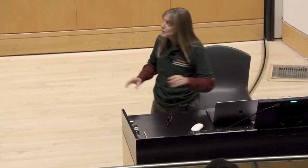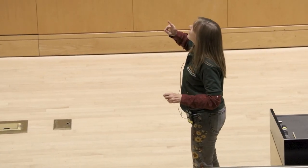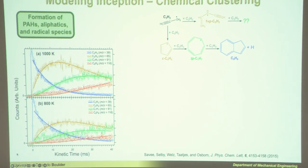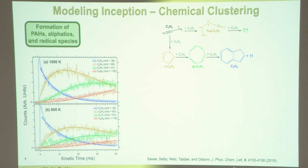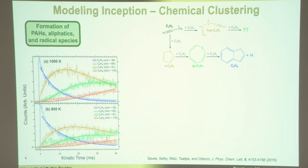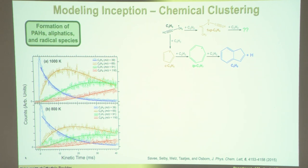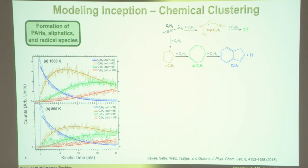Going back to the other side — chemical inception. Remember what we talked about yesterday: maybe resonance-stabilized radicals are the species helping us nucleate through some kind of radical chain reaction. What we need to do is understand how these radicals are forming and how they react to generate a particle.